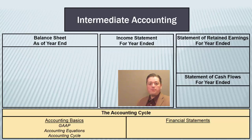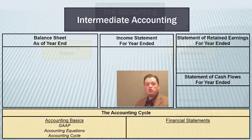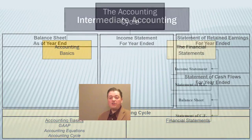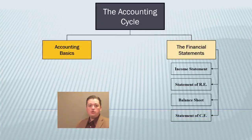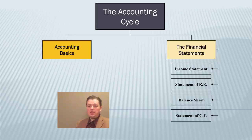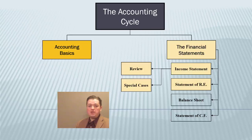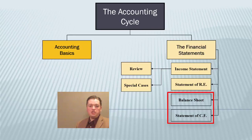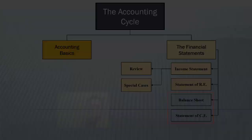Now that we've wrapped up our discussion of the accounting cycle, it's time to turn our attention to the other major piece of this review: the financial statements. We're going to break this discussion down into two pieces. In these next few segments we'll focus on the income statement and the statement of retained earnings, and then we'll talk about the balance sheet and the statement of cash flows later.